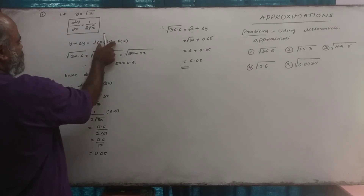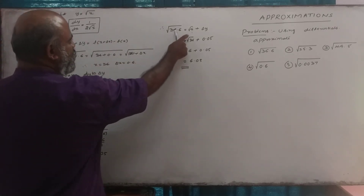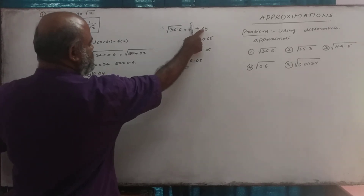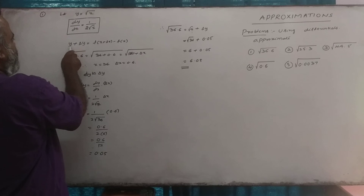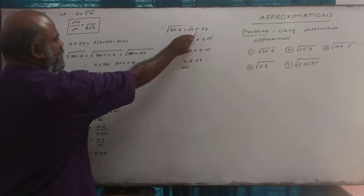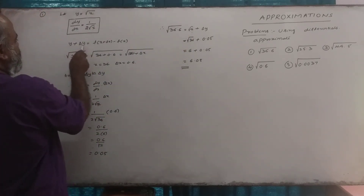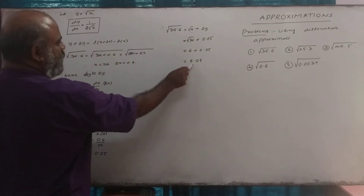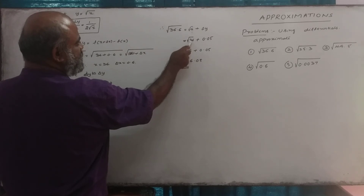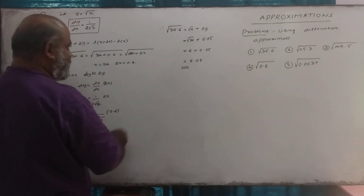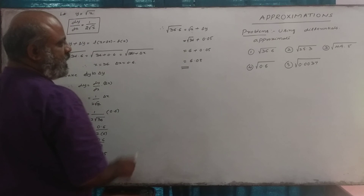This is the formula: y plus delta y is equal to root x plus delta y. This is the formula of the small increment method, also called the approximation method.